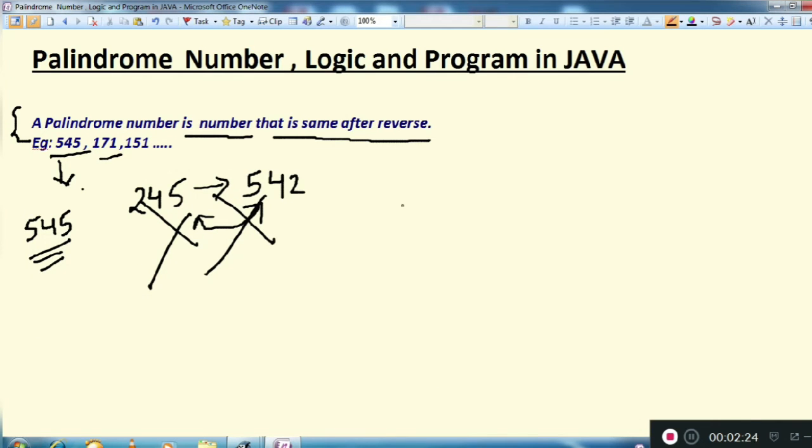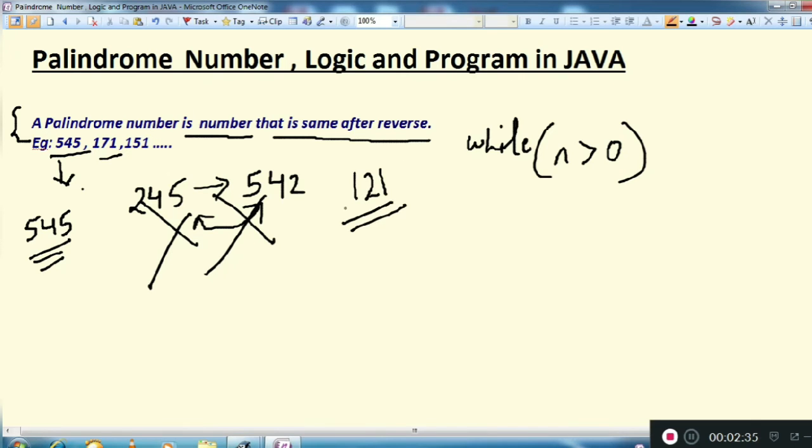Suppose we're writing while n greater than 0. Suppose your number is 121 for example. So what they are doing, d equals to n modulus 10. So what d is having now first time?